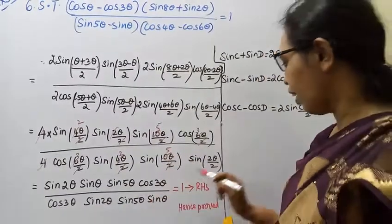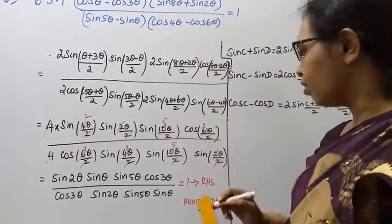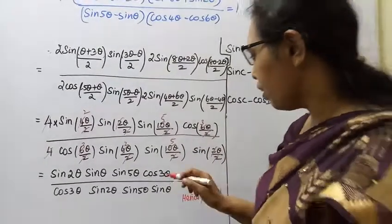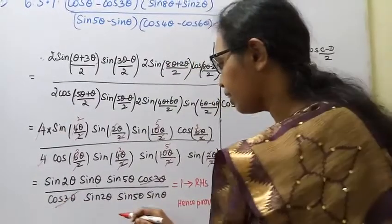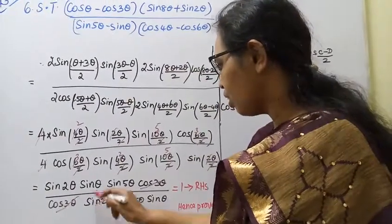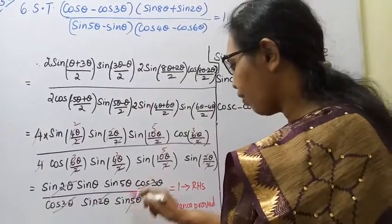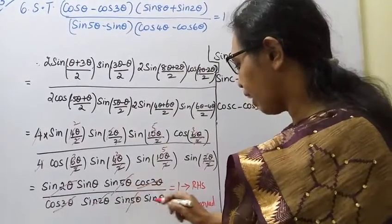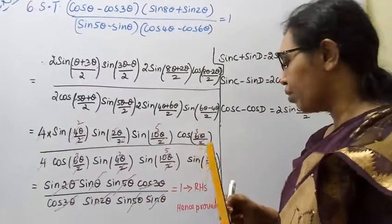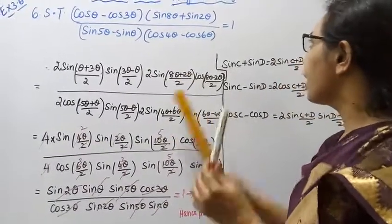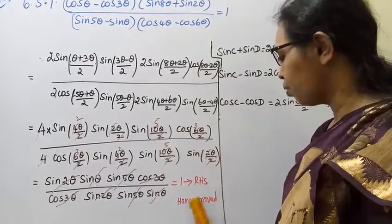All the theta terms are canceling — sin theta with sin theta — all of them canceling to give 1. The result equals 1, which is the right hand side. Hence right hand side is proved.